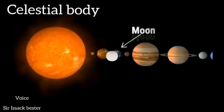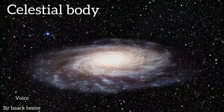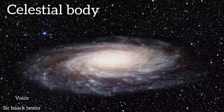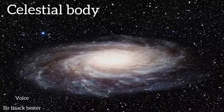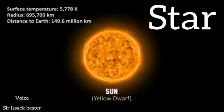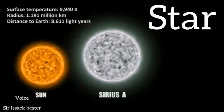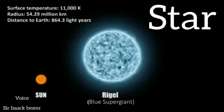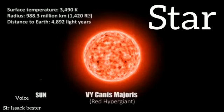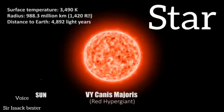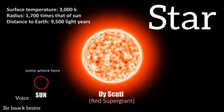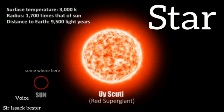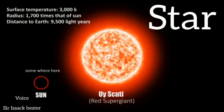What do you mean by celestial body? An object in the universe but not on the earth is said to be a celestial body. Examples are the sun, earth, moon, stars, etc. What do you mean by a star? A celestial body that is very hot and big and made of various kinds of gases is called a star. A star typically has its own heat and light and does not require light from any other celestial body.